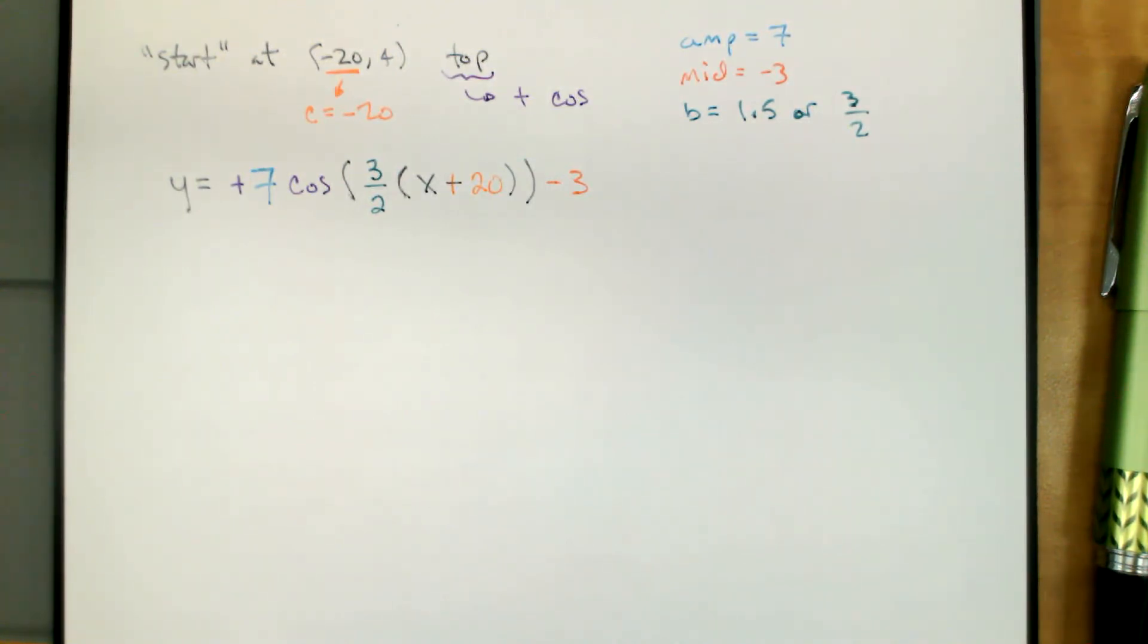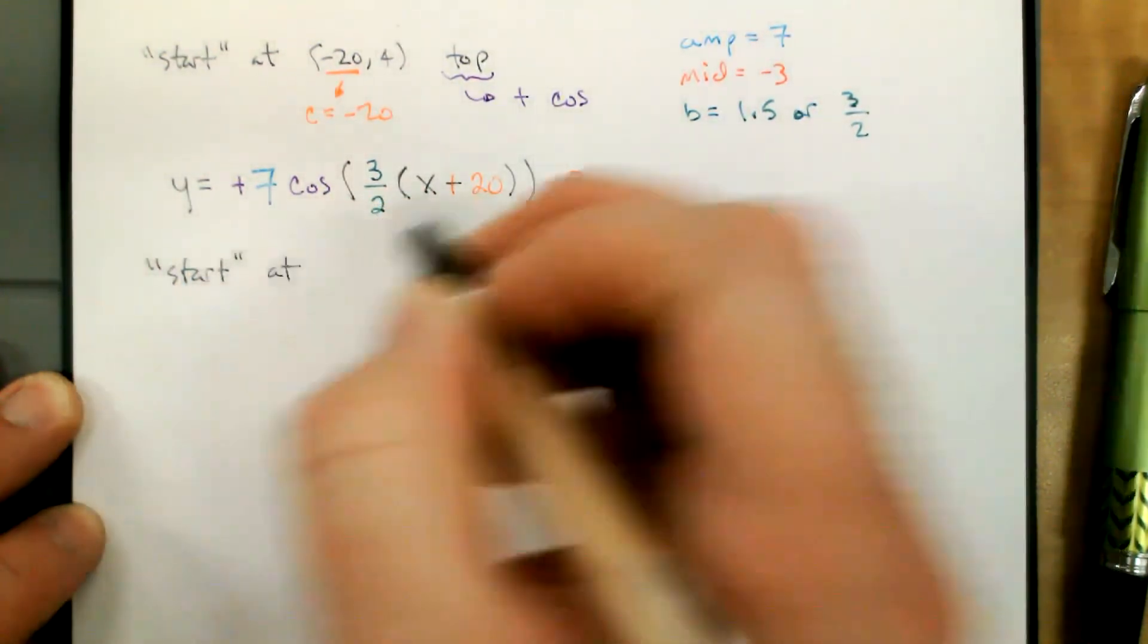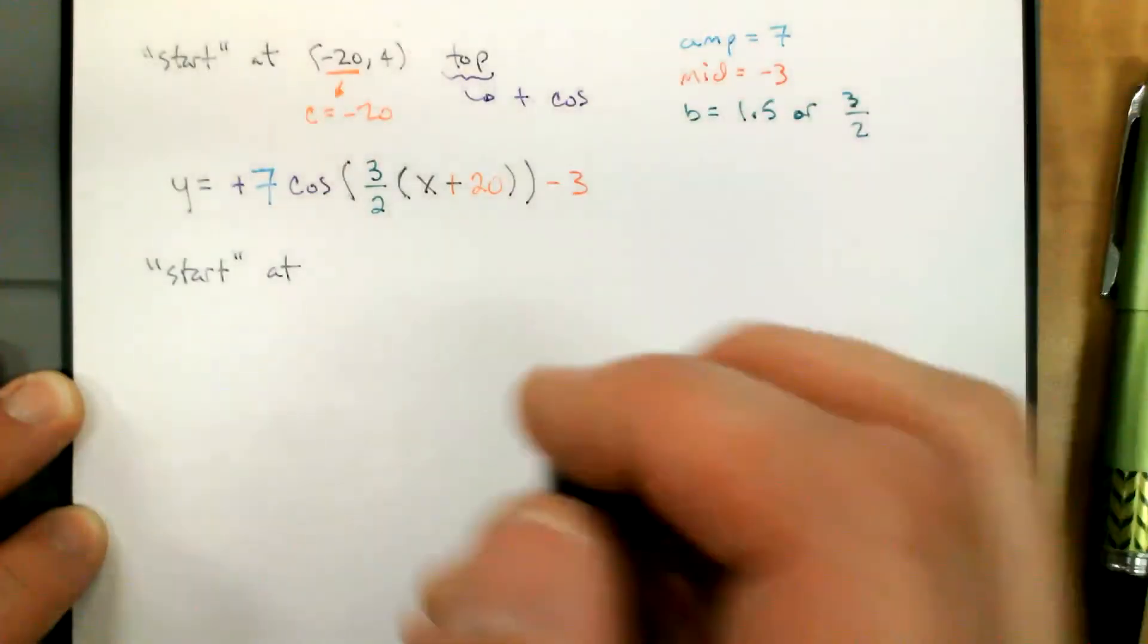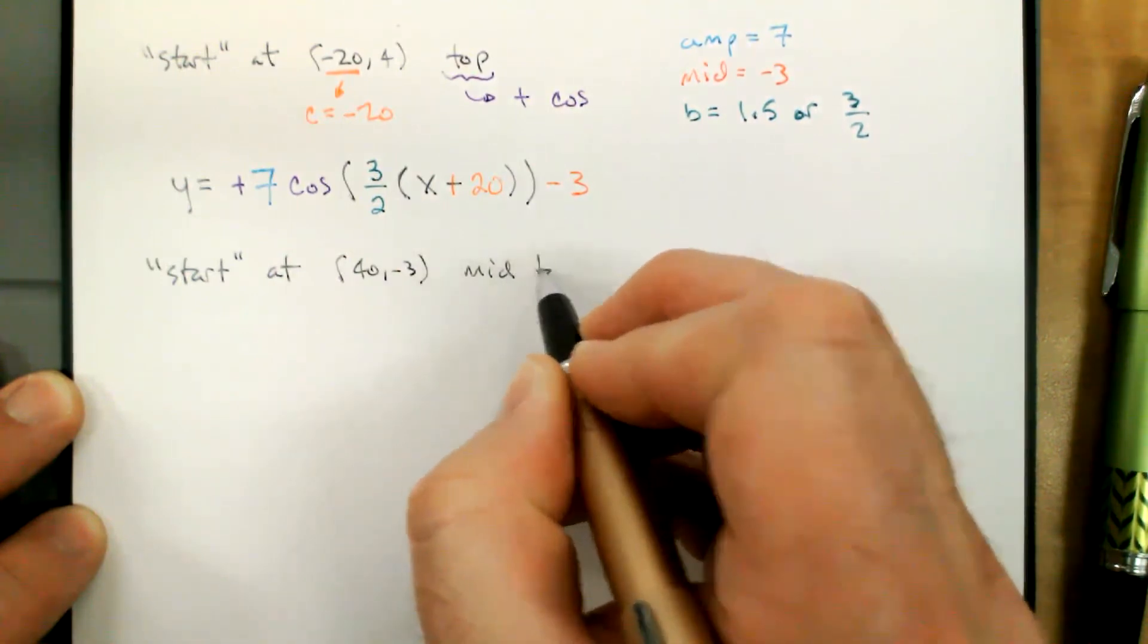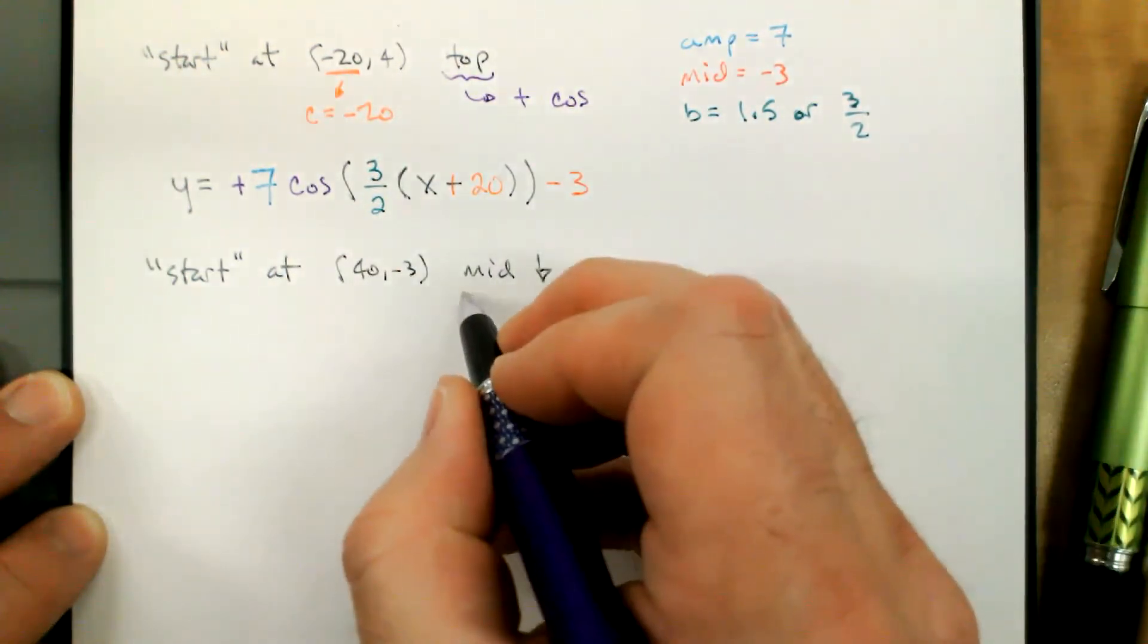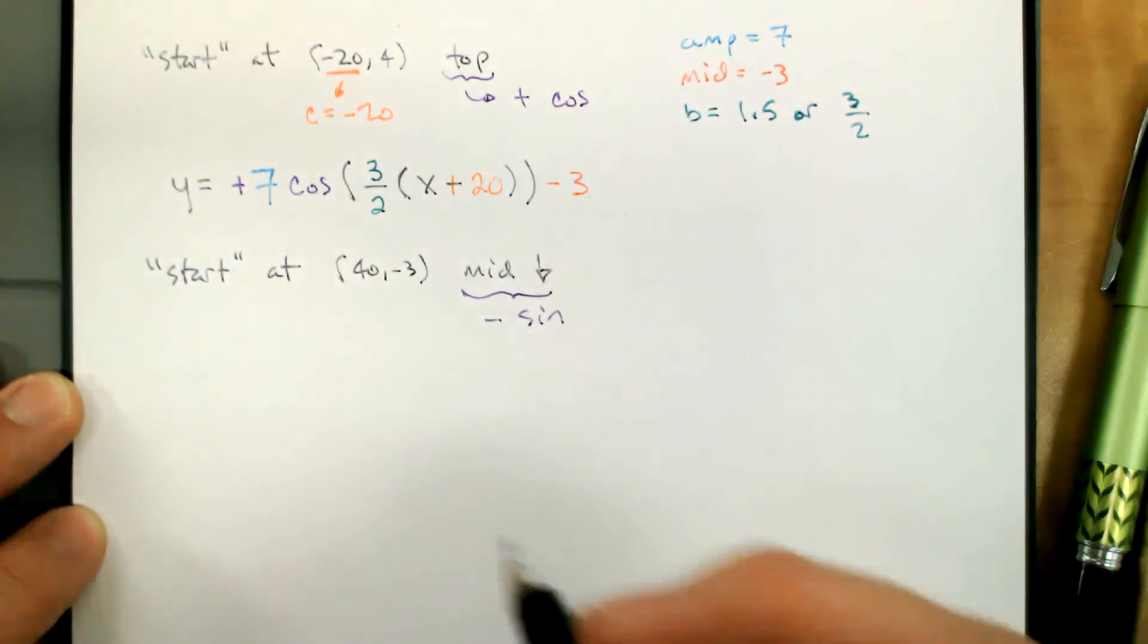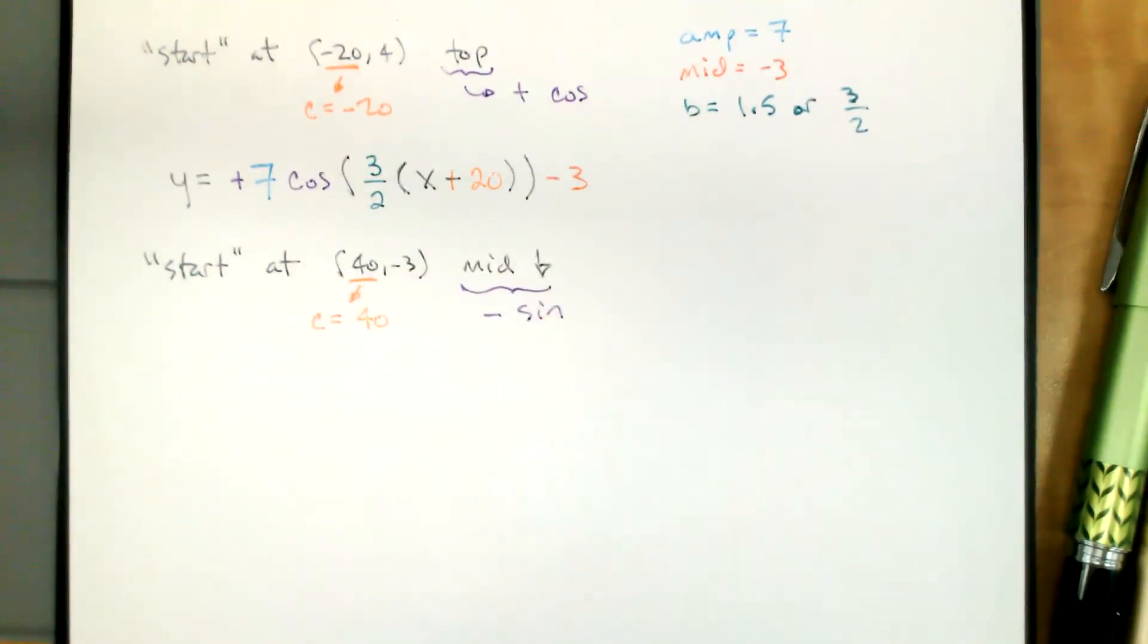If we chose a different starting point, we would have a different function and a different horizontal shift. All the rest of it would be the same. So if we chose to start at the next point, which was at 40, negative three, this is at the middle going down. Middle going down tells us to use negative sine. The 40 will tell us that C is 40. Amplitude, the middle, and the coefficient of x all stay the same.